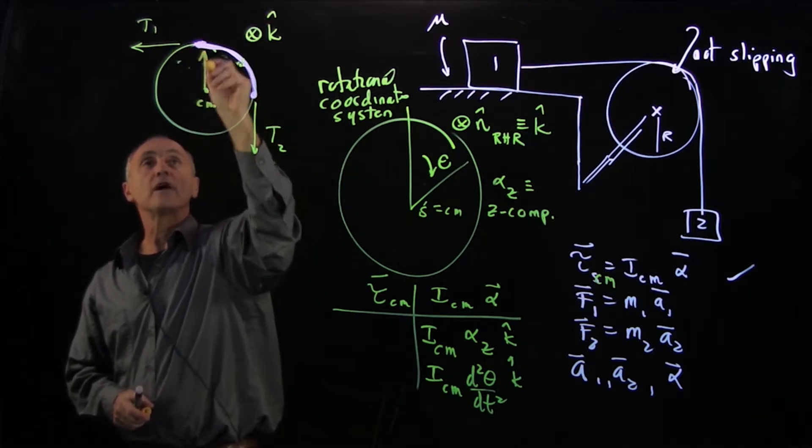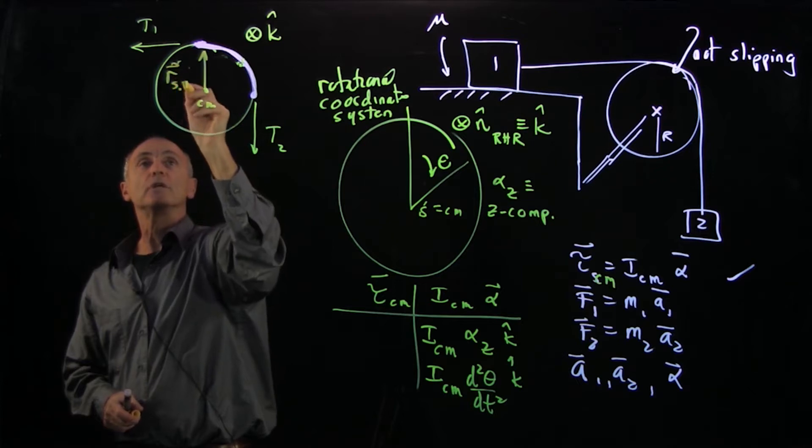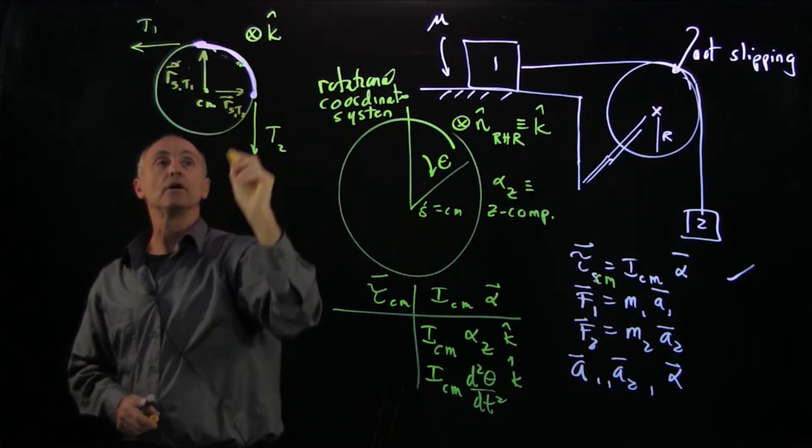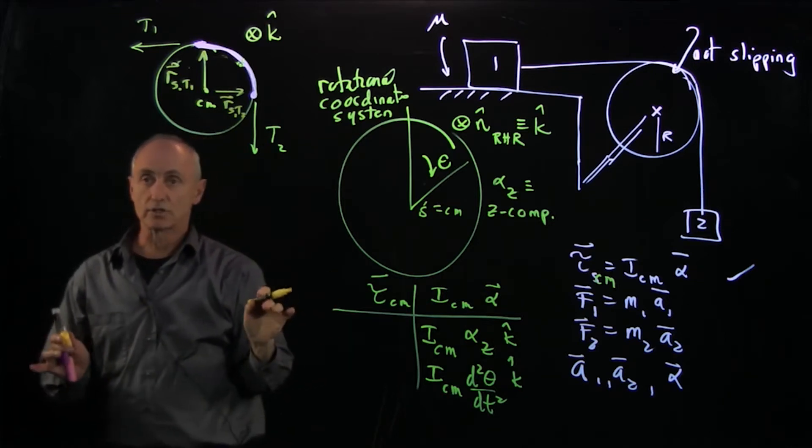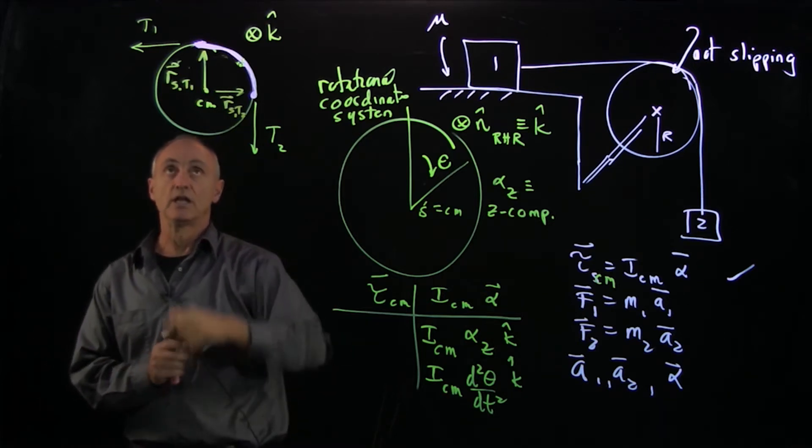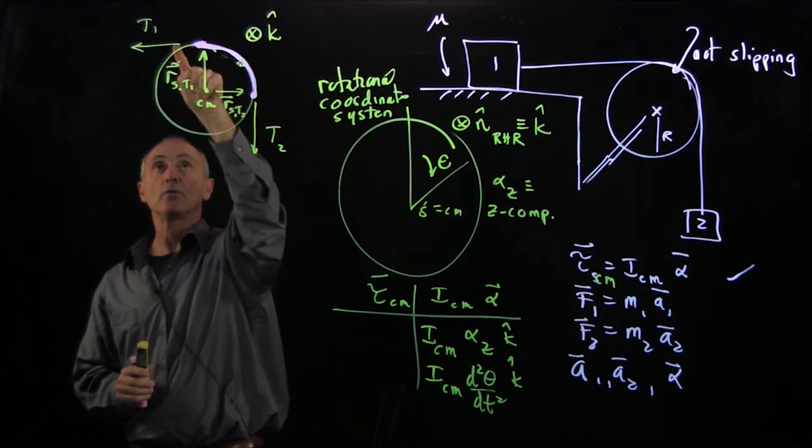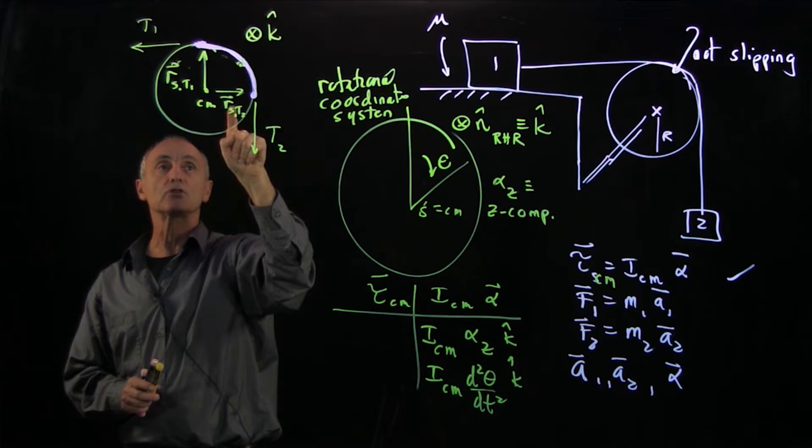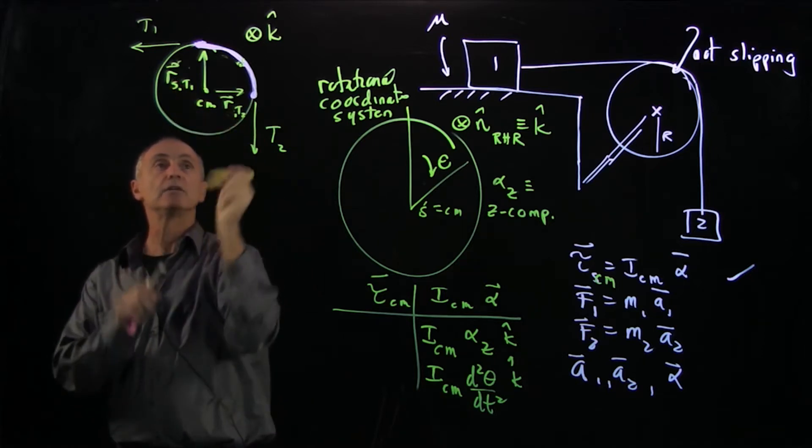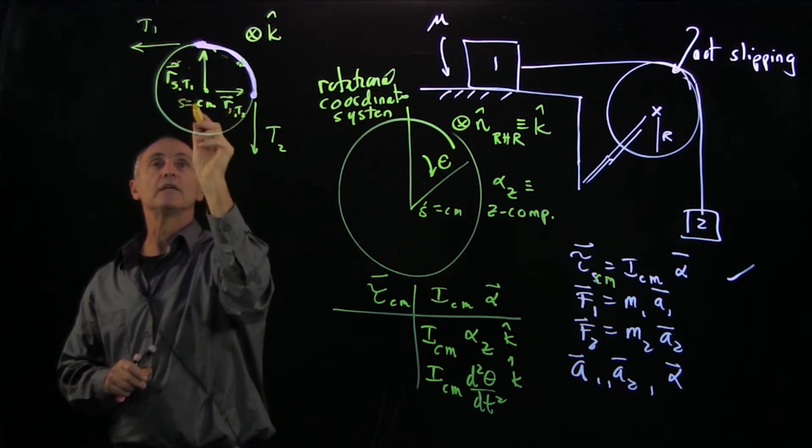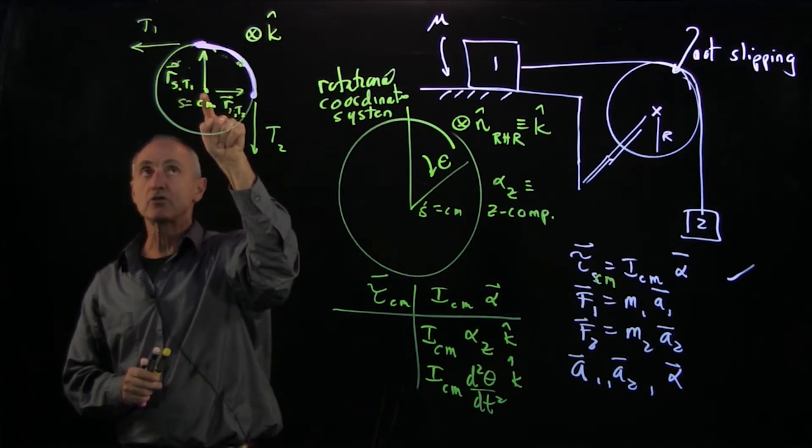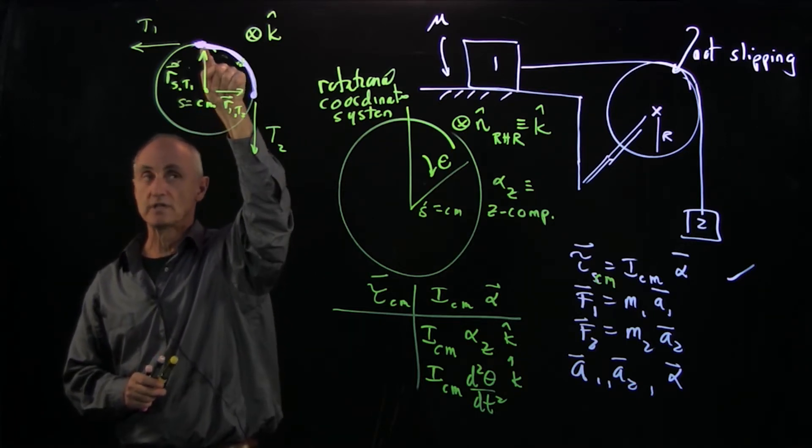So I draw my vector RST1 and my vector RST2. So this is what a torque diagram consists of. Let's summarize it: it's our system, the relevant forces that are producing torque, vectors from the point we're calculating the torque. S is the center of mass, and the vector from where we're calculating the torque to where the force is acting.